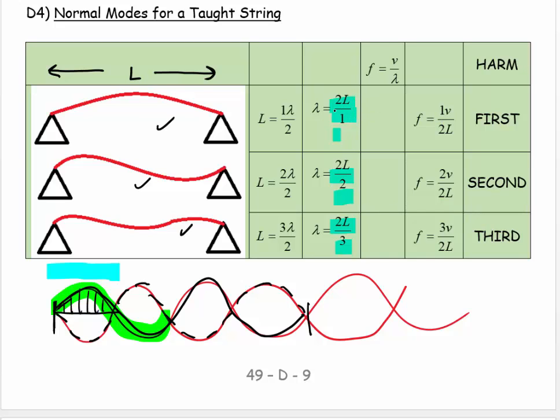Which would be v over 2L over 1, which comes to be v over 2L. And the next one would be v over 2L over 2...